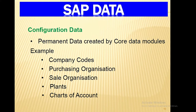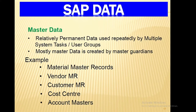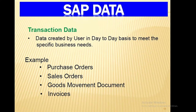SAP Data is categorized into three types. Configuration Data is permanent data created by core modules; examples include Company Codes, Purchasing Organization, Sales Organization, Plants, and Charts of Accounts. Master Data is relatively permanent data used repeatedly by multiple system tasks and user groups; examples include Material Master, Vendor Master, Customer Master, and Cost Center Account Masters. Master Data is mostly created by Master Guardians.